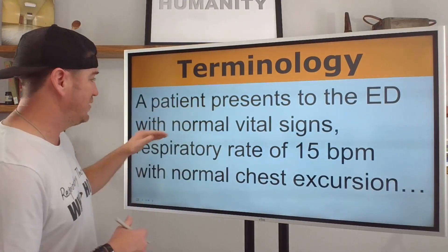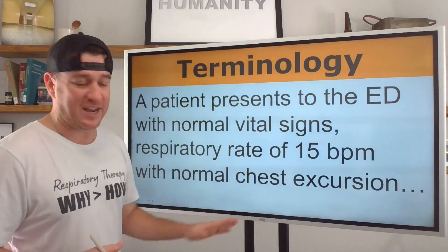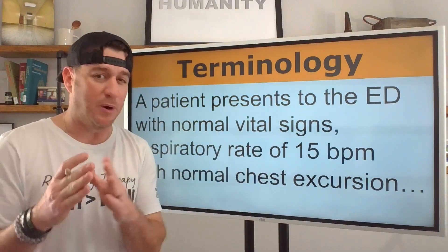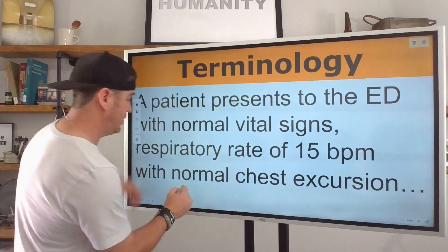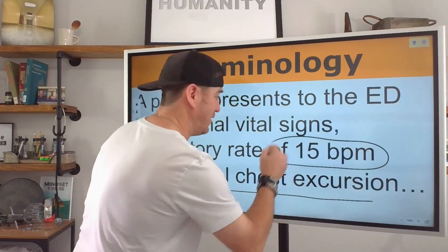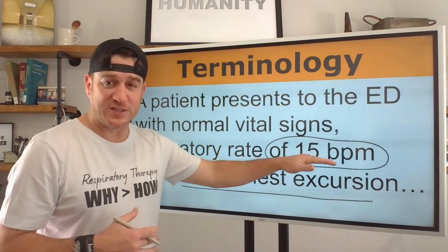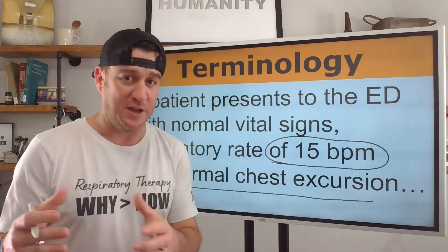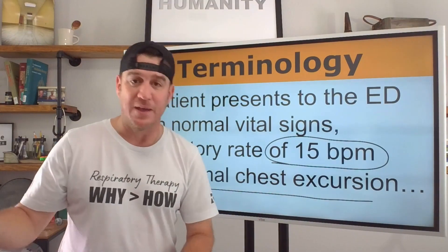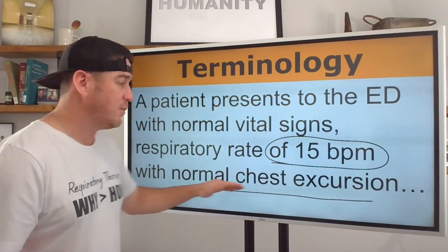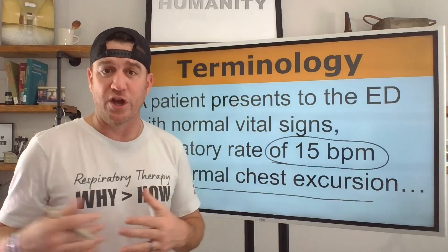A patient presents to the ED with normal vital signs. You have a respiratory rate of 15 breaths per minute with normal chest excursion. Right here, 15 breaths per minute falls in the normal respiratory rate range, which Egan's defines on page 327 as normal resting adult respiratory rate of 12 to 18 breaths per minute with normal chest excursion. What is chest excursion? Chest excursion is how much the chest wall moves outward during inspiration.